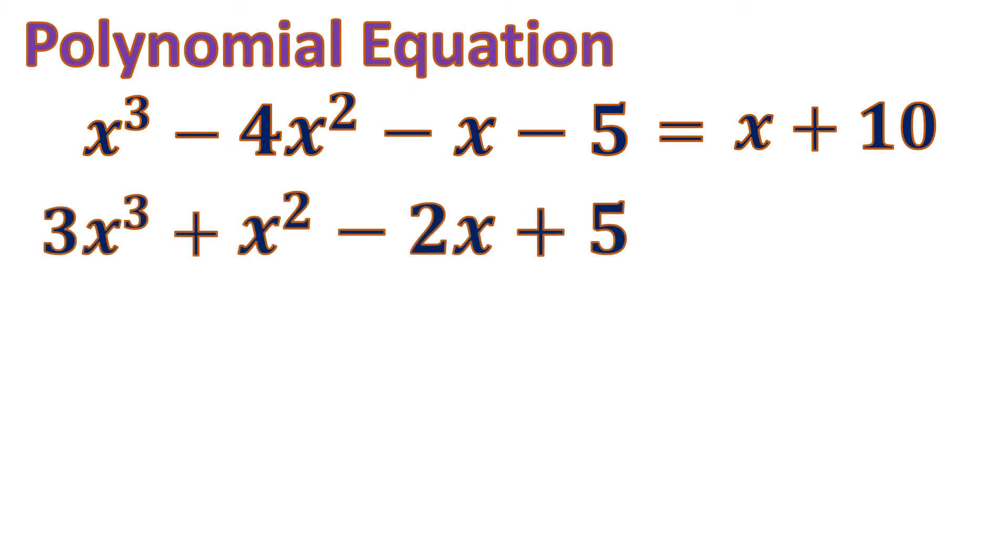It can also be like this. 3x cubed plus x squared minus 2x plus 5 equals negative 8. So, as you can see, the polynomial is left and at the right is just a constant.